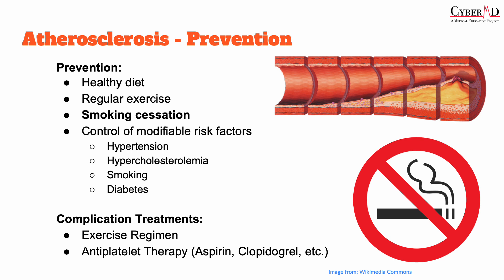It is important to note that atherosclerosis is a preventable and manageable disease. Proper lifestyle modification, including a healthy diet, regular exercise, and smoking cessation, can help reduce the risk. Controlling modifiable risk factors such as hypertension and hypercholesterolemia can also help manage the disease. The primary form of treatment is controlling those modifiable risk factors. However, when that fails and patients have known significant atherosclerotic disease or arterial complications such as a stroke, we give antiplatelet therapies such as aspirin and clopidogrel when conservative modalities like a graded exercise regimen fail.